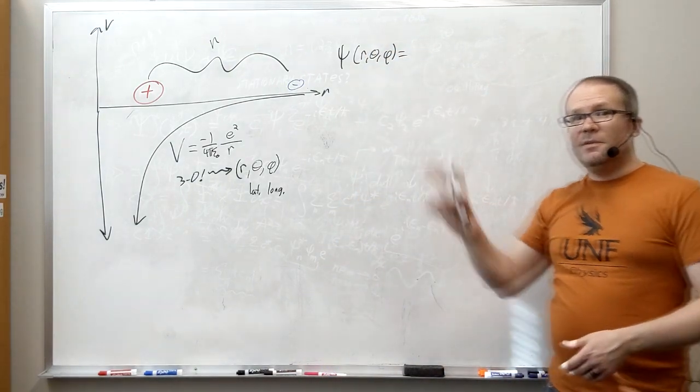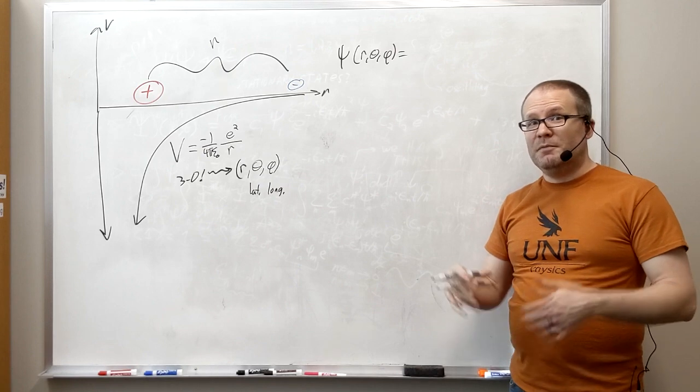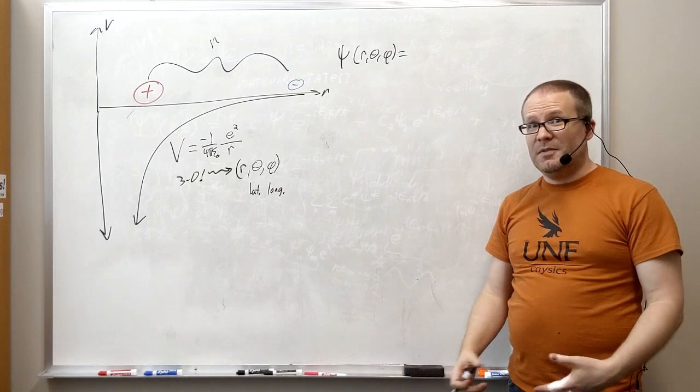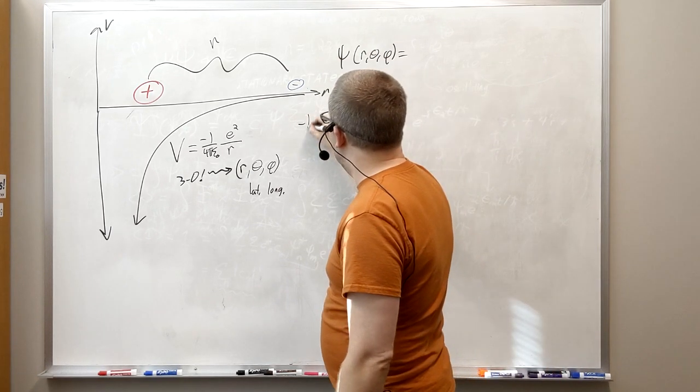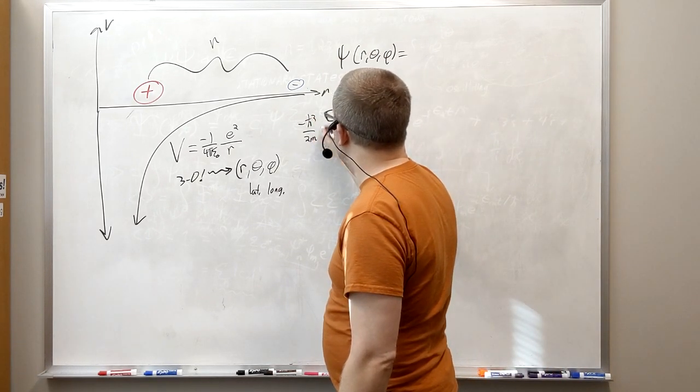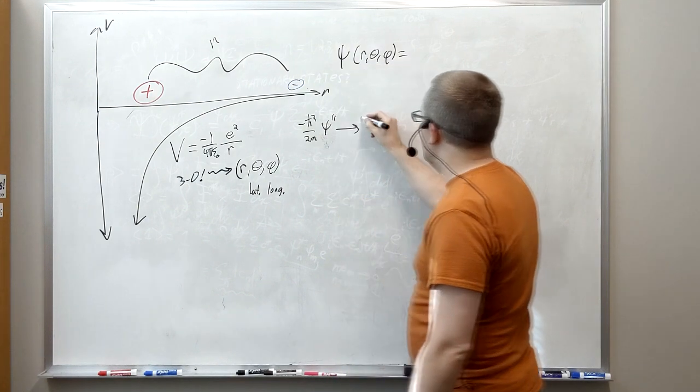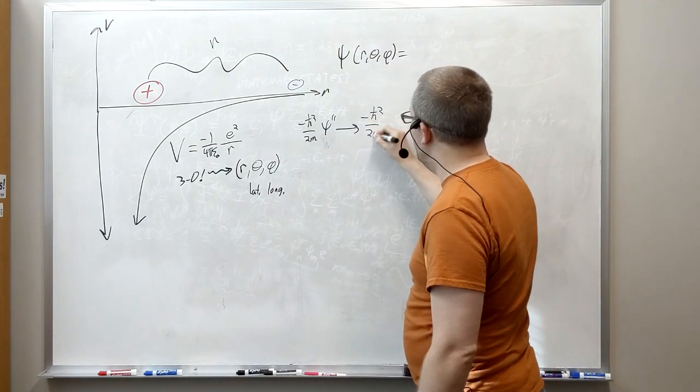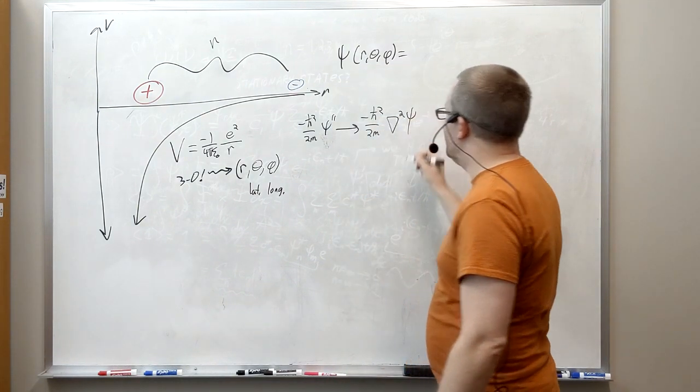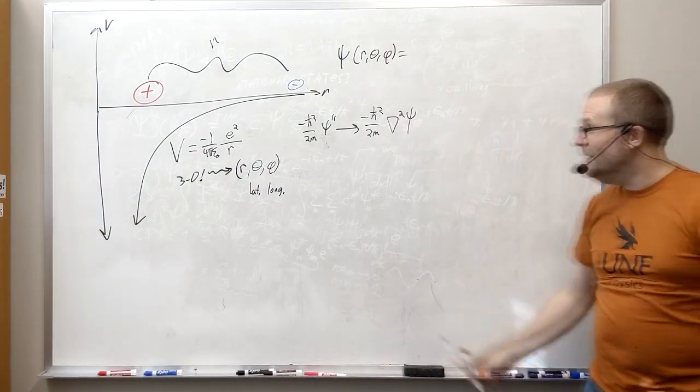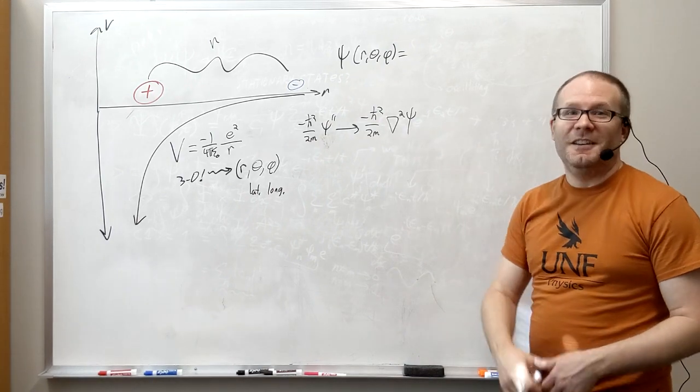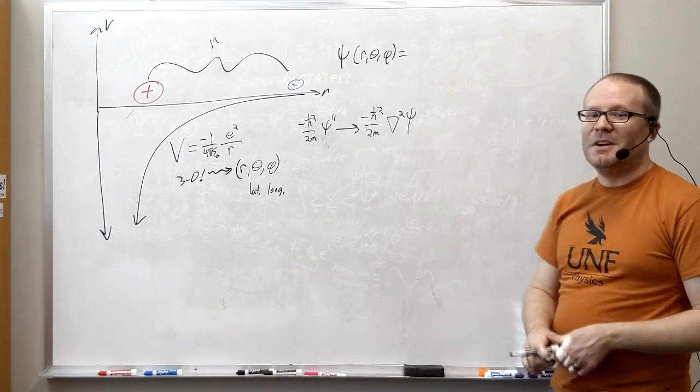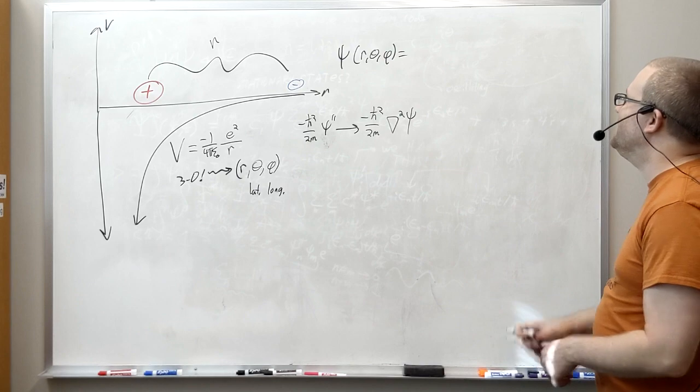This is actually really difficult to work with because we have to bring in all the derivatives from three dimensions. We have to remember for the Schrodinger equation, you had this minus h-bar squared over 2m psi double prime. Well now that's got to be a minus h-bar squared over 2m, the Laplacian of psi. If you've never seen the Laplacian, you're in for a treat whenever you get there in your calculus sequence.